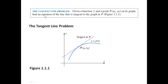Let's start the tangent line problem. Given a function f and a point P at (x₀, y₀) on its graph, find an equation of the line that is tangent to the graph at P. Here the graph is y = f(x), this is the point P, and this is the tangent at P. We have to find the equation of the tangent.